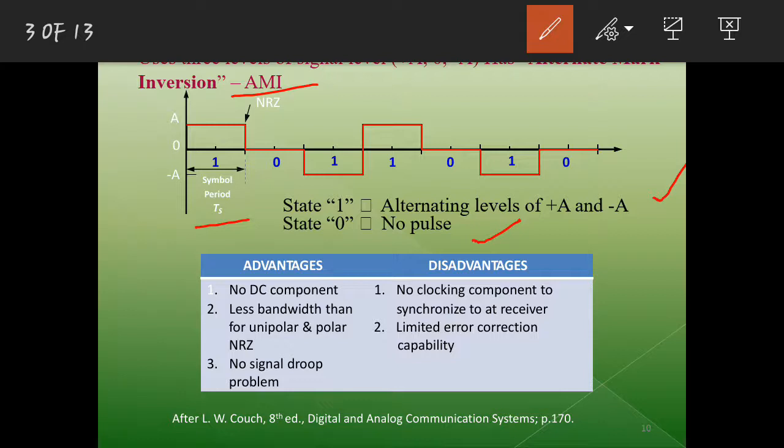Again bit one positive because previously it was negative. Again zero, zero. Bit one. Previously it is positive, therefore this will become negative. So positive, negative, positive, negative. Alternatively it changes the thing, so we call it as alternative mark inversion.